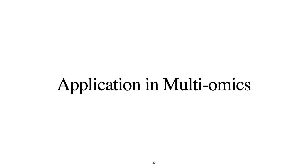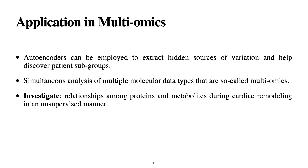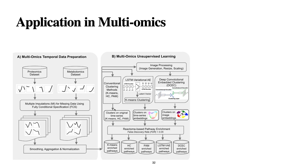Now let's see the application in multiomics. We know that autoencoders can be used to extract patient subgroups. The next paper I will discuss shows that the convolutional autoencoder approach can also be used to find the relationship among proteins and metabolites during cardiac remodeling in an unsupervised manner. Cardiac remodeling refers to heart-related diseases, and here they want to investigate how many correlations they can find by training their model in an unsupervised way.